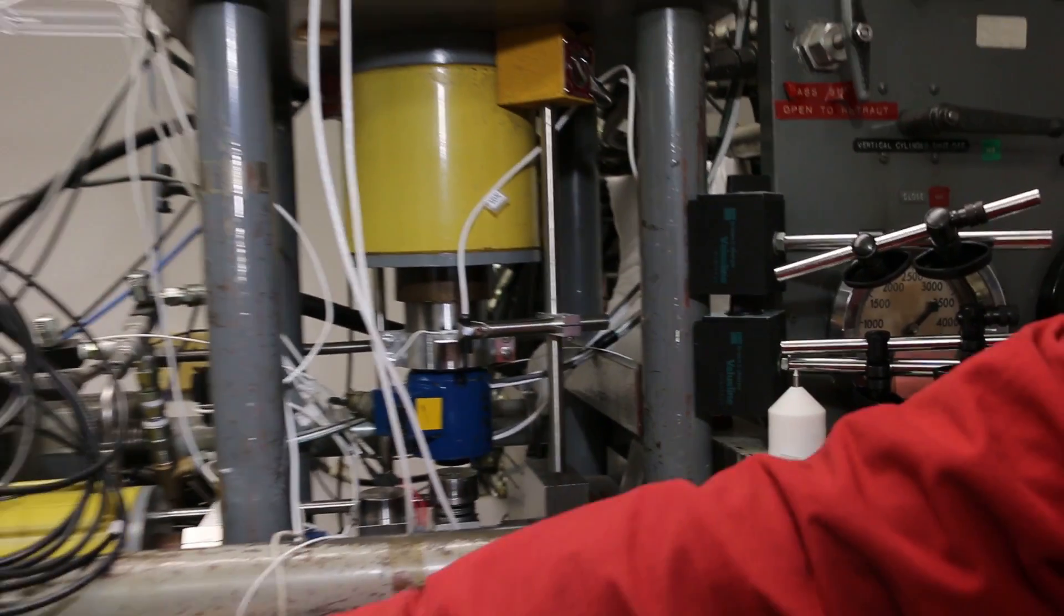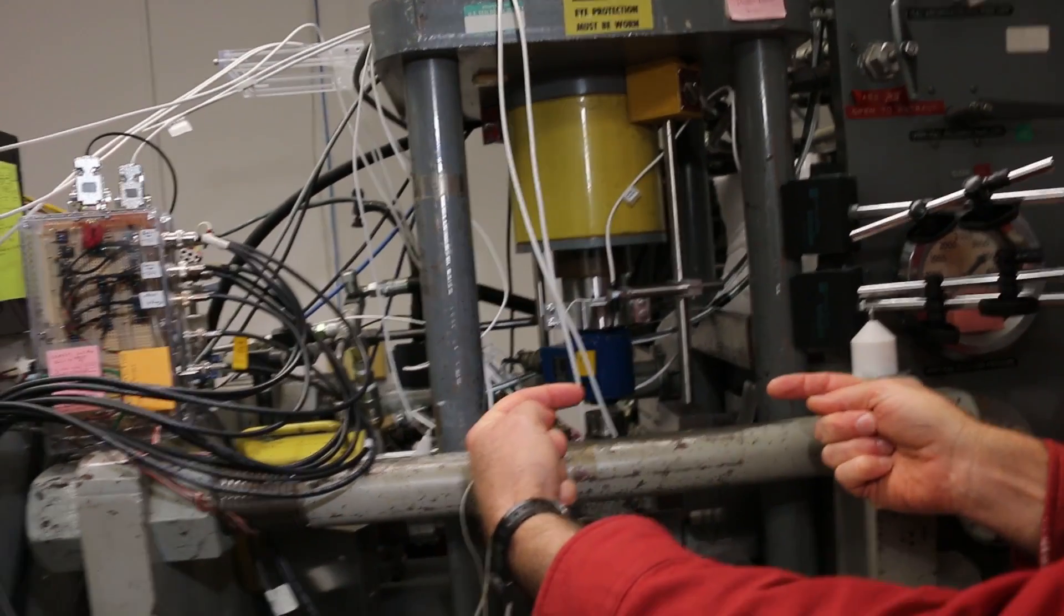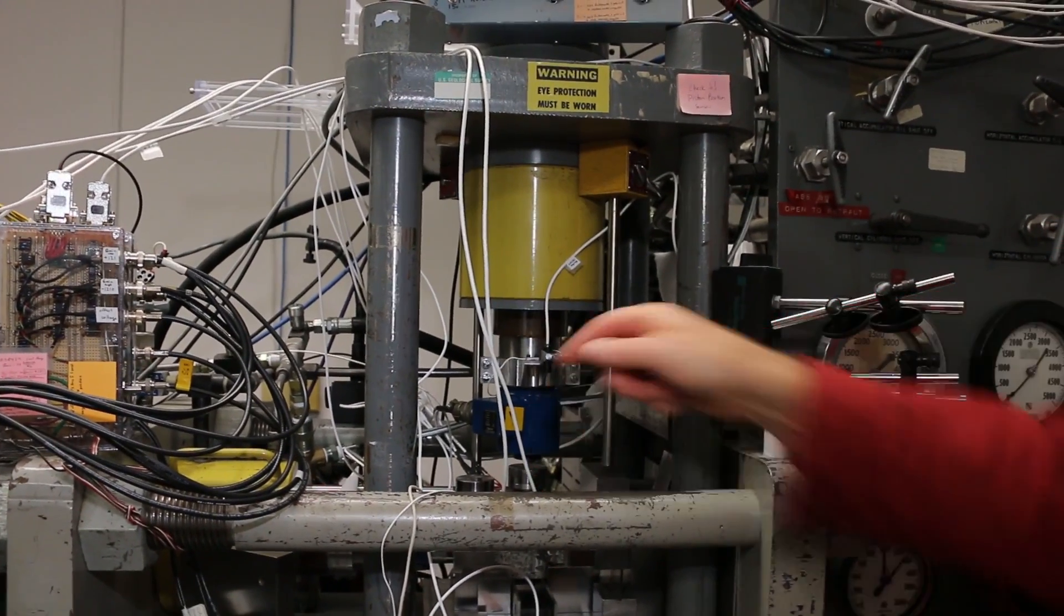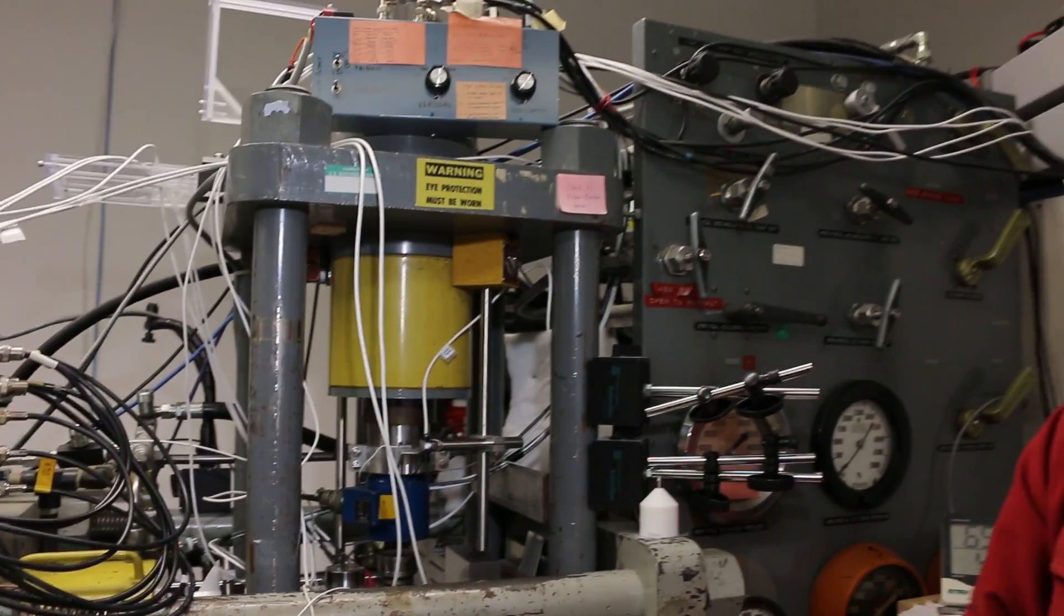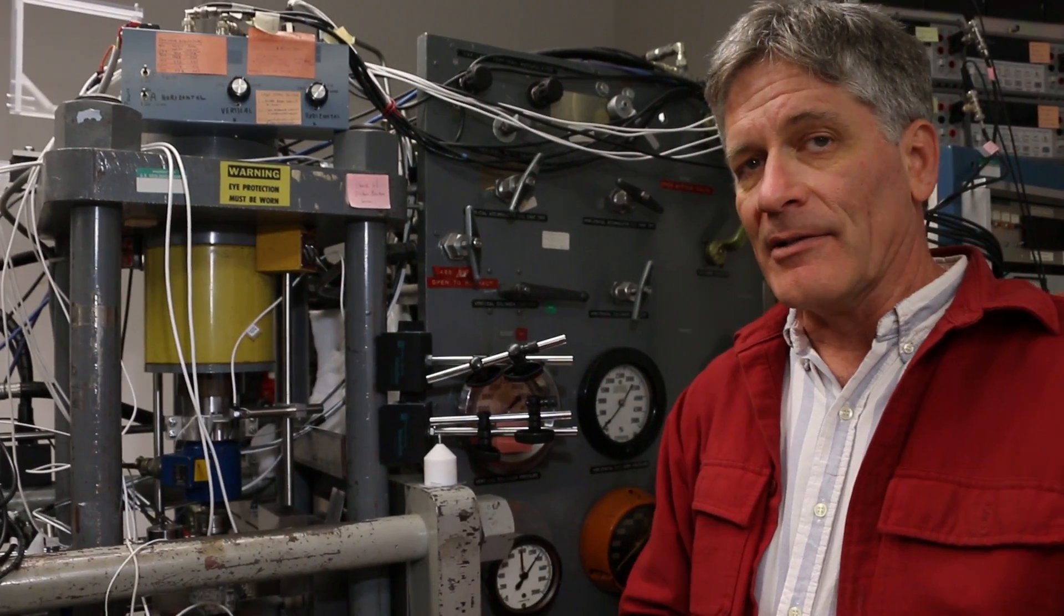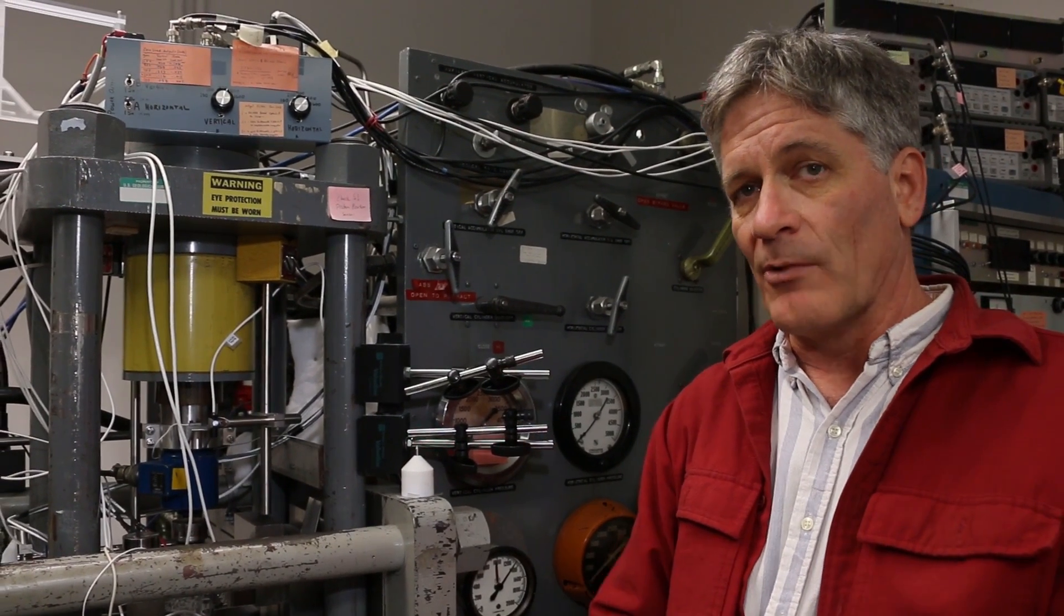And the way this machine works is there's a yellow hydraulic ram in there that squeezes the samples together. This way applies a normal stress to actually two faults in there. And this hydraulic ram pushes the center block between those two side blocks at a fixed rate.